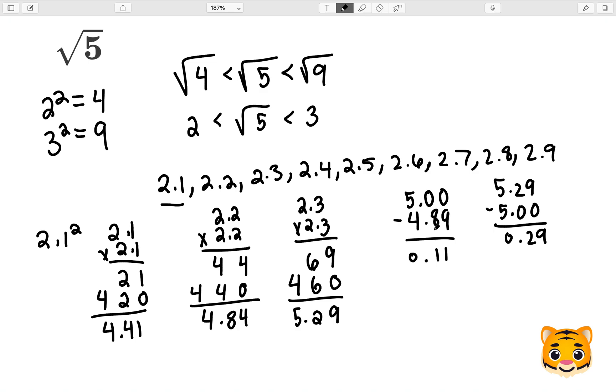So because 4.89 is closer to 5, the value chosen, 2.2, will be closer to the square root of 5. Therefore, we can rewrite the square root of 5 as approximately 2.2.